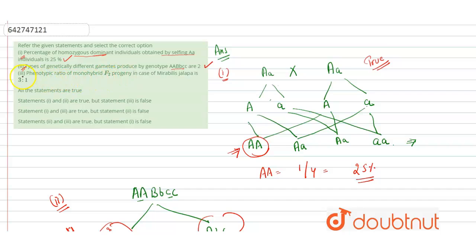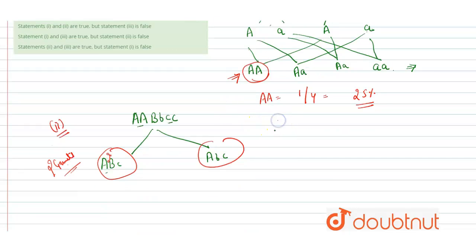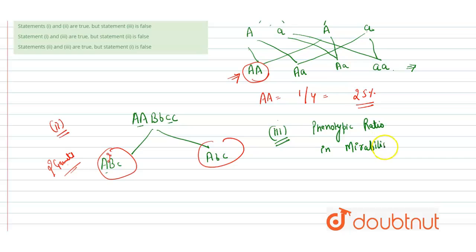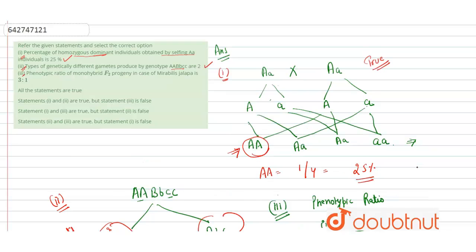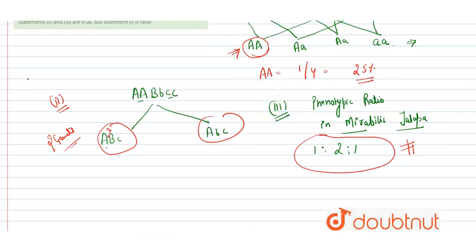Now we take the third statement: phenotypic ratio of monohybrid F2 progeny in case of Mirabilis jalapa is 3:1. The phenotypic ratio in Mirabilis jalapa is actually 1:2:1, not 3:1. In a monohybrid cross with Mirabilis jalapa, we get this 1:2:1 ratio due to incomplete dominance. So although the question says 3:1, the correct ratio is 1:2:1, making this a false statement.